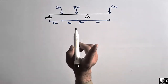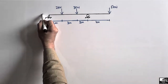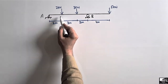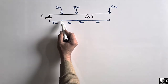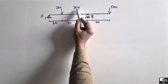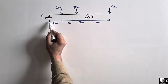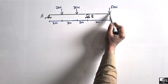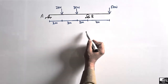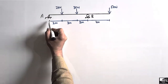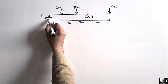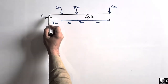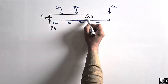Let's consider that this is support A and this is support B. The loads on the beam are 2 kN acting at a distance of 2 meters from this end, 3 kN at a distance of 5 meters from this end, and a load of 5 kN acting at this end of the beam. This is a pin support, so it will resist the vertical load RA.